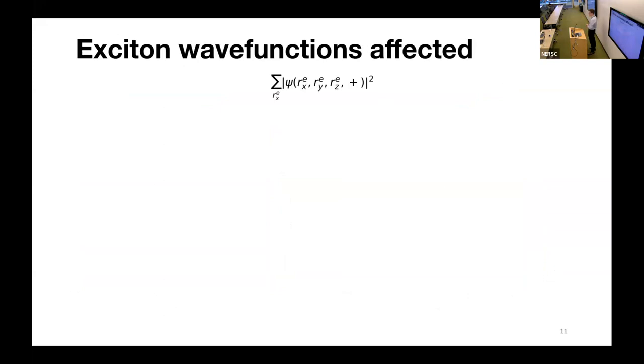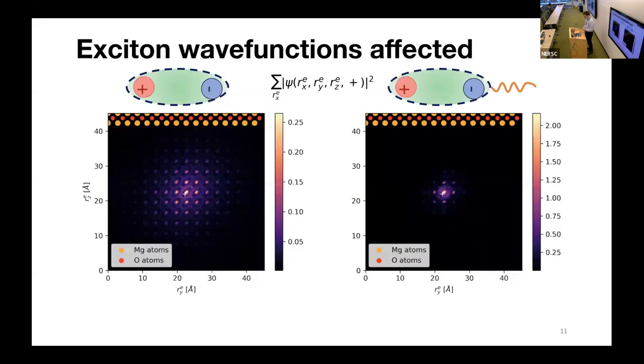Another fundamental property of excitons are their wave functions. We're able to capture the wave functions and how they evolve as a function of introducing this coupling. What we're plotting is the electron part of our two-particle wave function. Remember, we have an electron and a hole. We're fixing the hole at this coordinate, and looking at how the electron wave function looks. You can see that it basically looks like an S orbital around the hole position.